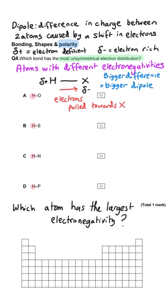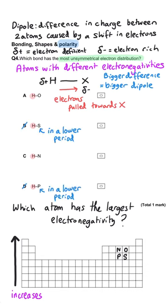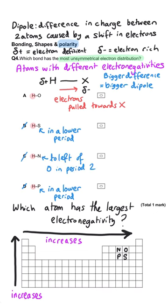There are two rules about electronegativity: elements get more electronegative higher up in their group, and electronegativity increases across a period. Oxygen is in period two, sulfur in period three, nitrogen in period two, and phosphorus in period three. We can rule out sulfur and phosphorus because they'll have lower electronegativities than oxygen and nitrogen — closer to hydrogen. Between oxygen and nitrogen, electronegativity increases across a period, so oxygen has greater electronegativity than nitrogen and the biggest difference compared to hydrogen. So A is the correct answer.